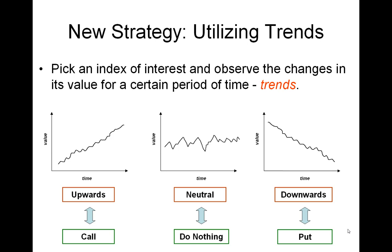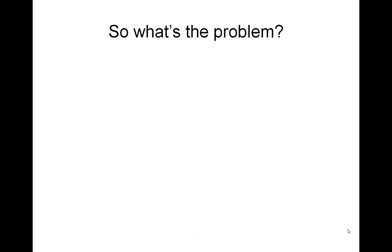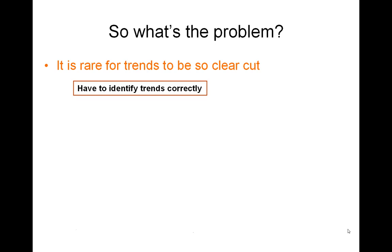Essentially, by looking at the trends for any particular index — or stock or commodity — we're able to make good guesses at what the future value is going to be and make effective trades. So what's the problem? It seems like a fairly logical strategy. First and foremost, it's very rare for trends to be so clear-cut. Often the actual patterns can resemble something like the neutral pattern, or something in between neutral and either the downwards or upwards pattern, and we have to be really careful that we're identifying the trend correctly.